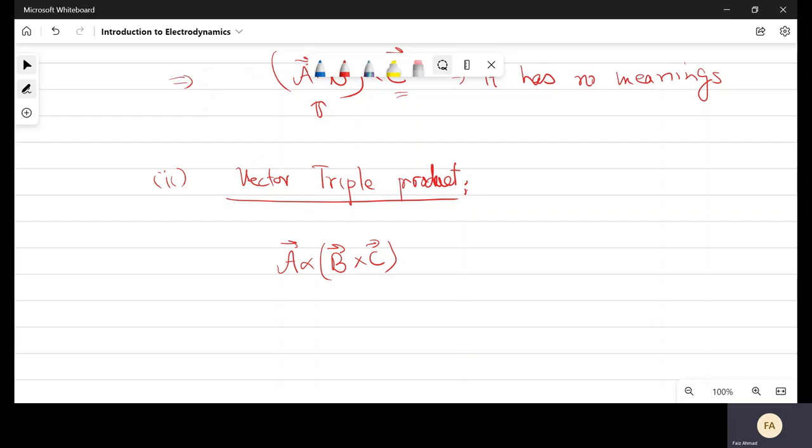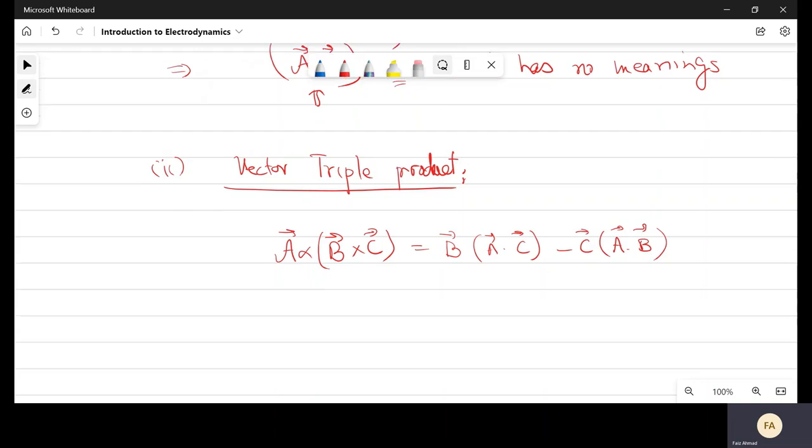So vector triple product is A cross B cross C. And it can be simplified using the backcap rule. So backcap rule is B times A dot C minus C times A dot B. And the order of A cross B cross C, if you want to change it like B cross C cross A, then it will come a negative sign.